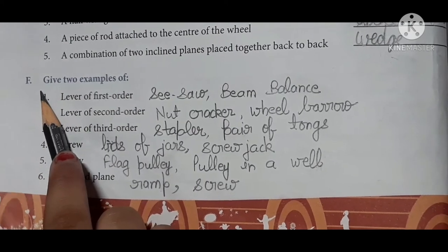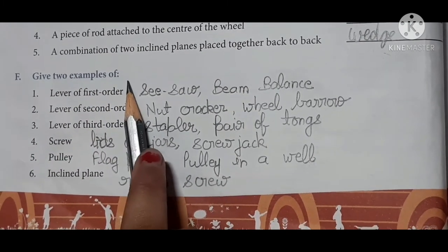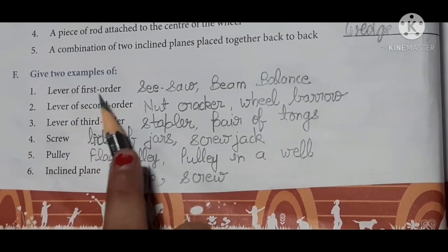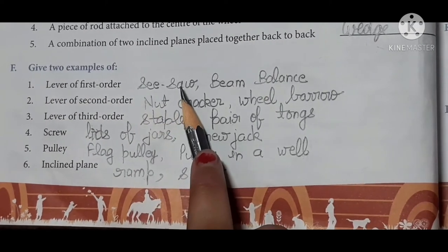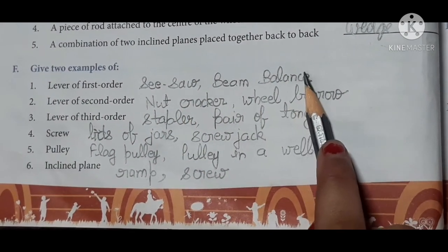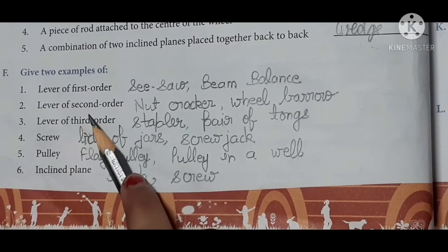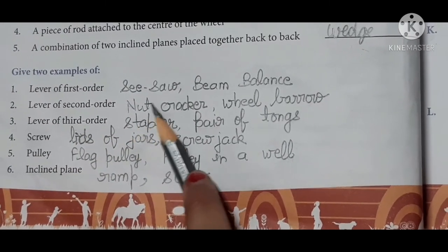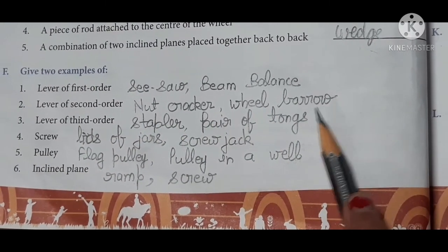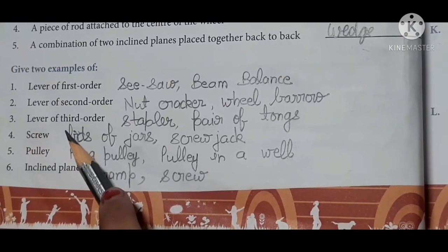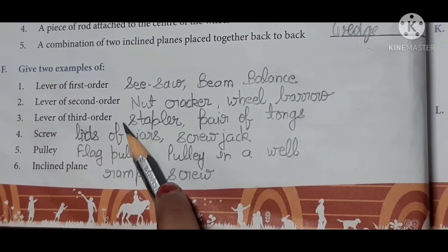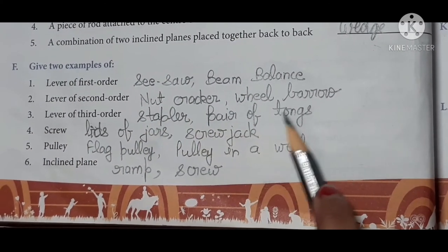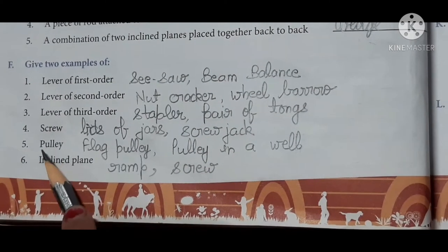Exercise F. Give two examples of: First, lever of first order. Seesaw and beam balance. Second, lever of second order. Nutcracker and wheelbarrow. Third, lever of third order. Stapler and pair of tongs.